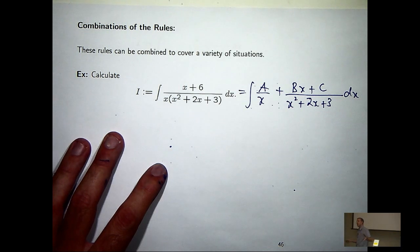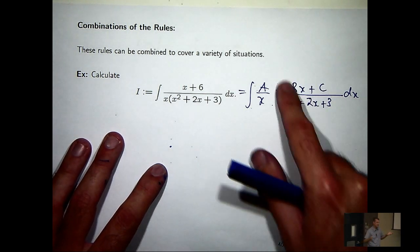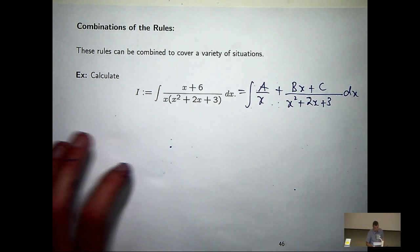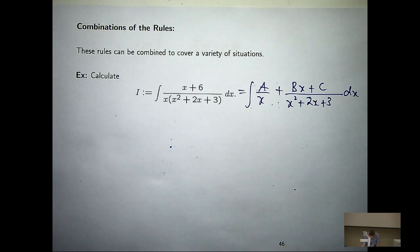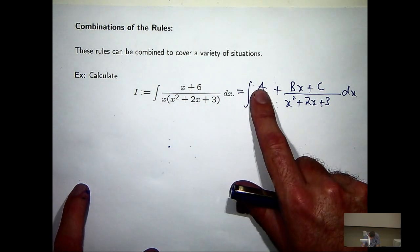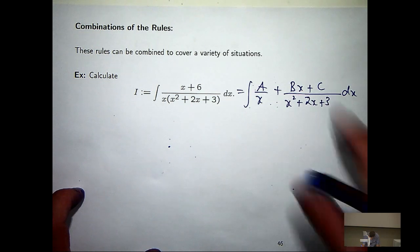Notice up top I've got bx plus c, and I've got a quadratic on the bottom that won't factor. This is a standard procedure for these problems. So I'm going to have to do two integrals. The first one's easy enough, but first I have to calculate a, b, and c.